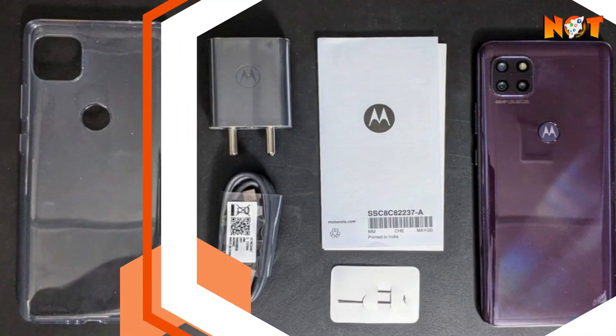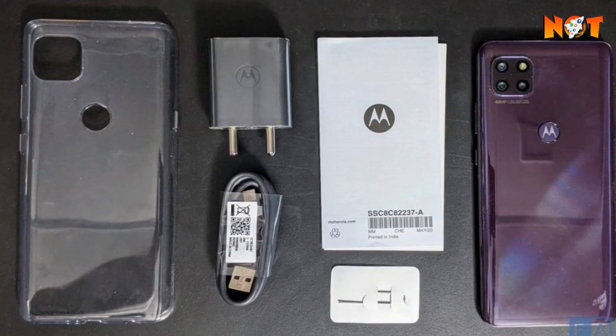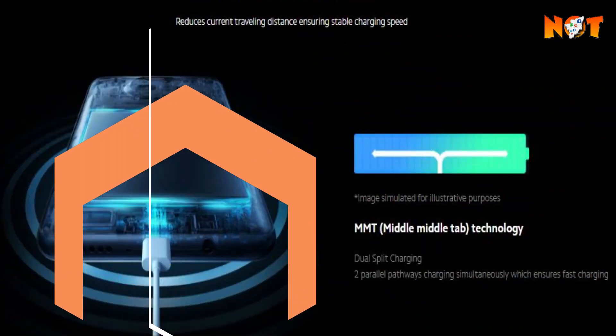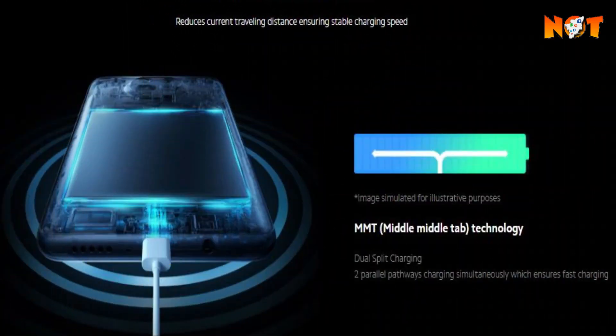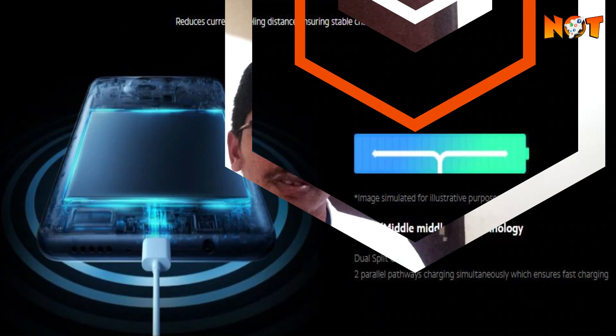Next, for charging, there is a notable difference. The Motorola G5G comes with a 20W charger, while the Mi 10i supports 33W charging, making the Mi faster to charge.